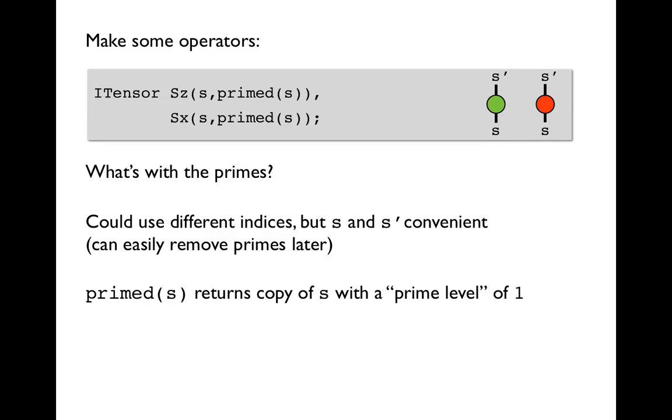So to do this, we just declare two more itensors that are going to become the operators Sz and Sx. So of course, since they're operators, they're like matrices, and they have to have two indices. Now our convention in the library is to make these two indices to be, well one of them has to be the site index, so that we can act on our site, and then our convention is to make the other one the prime of the site index.